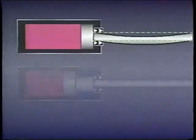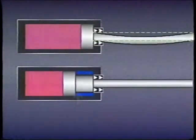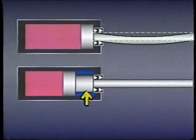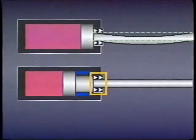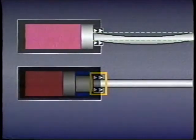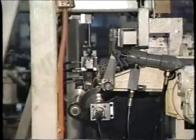Sometimes stop tubes are installed in cylinders to help provide support for long piston rods. The tube helps minimize damage to the rod gland and to the inside of the cylinder body.